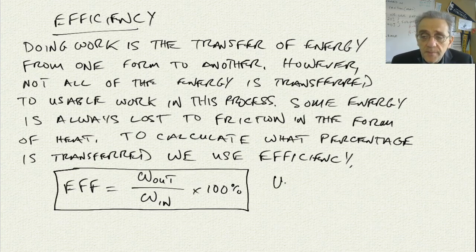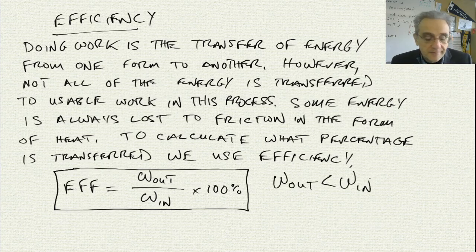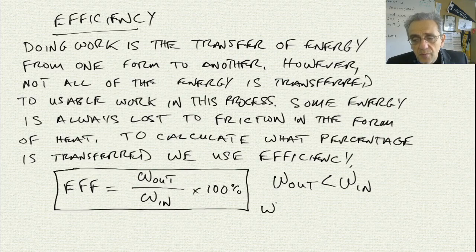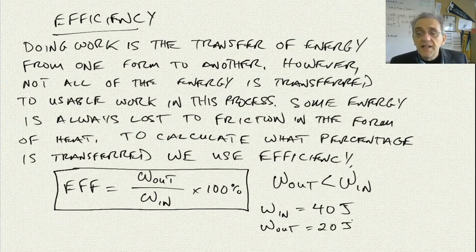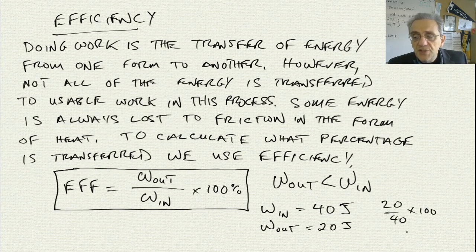What this means is that the work output is actually less than the work input. So an example: if you put work into something of 40 joules, and the work that you get out is 20 joules — let's say this is electrical energy and this is gravitational potential energy — you've got 20 divided by 40 times 100, which gives you an efficiency of exactly 50%.